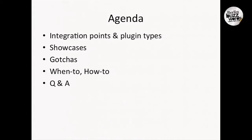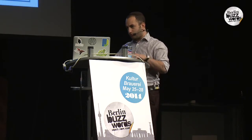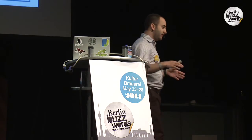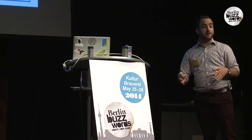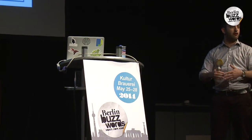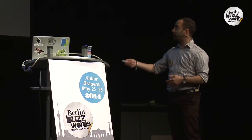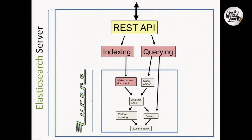Looking at Elasticsearch on a high level - no offense - but Elasticsearch can generally be thought of as an HTTP server on top of Lucene. What you can see here is basically the Elasticsearch server, and within that server we have Lucene. Elasticsearch basically takes in REST requests, sends back responses, and you can either do indexing or querying, and those requests are delegated to a Lucene index.